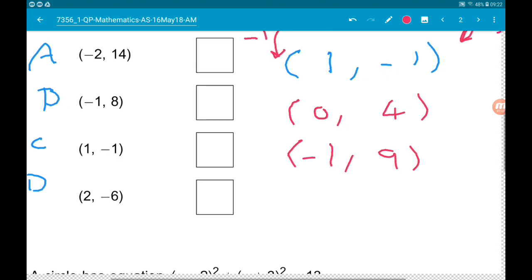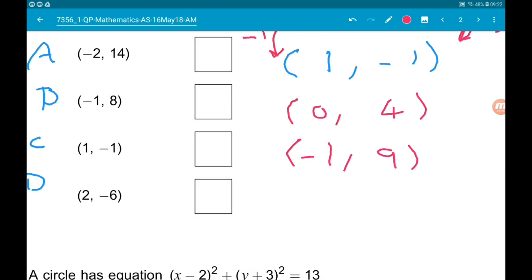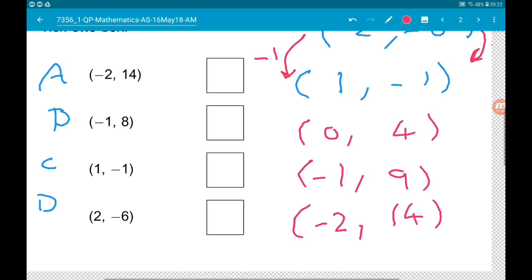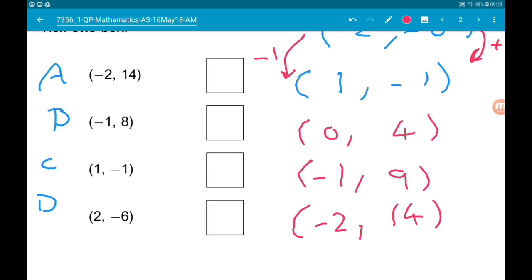Let's see if A does. If we take 1 off the x, we get minus 2 and add 5 to the y coordinate, we get 14, which is point A. So A, C and D lie on the same straight line. B is the one that doesn't. Cool.